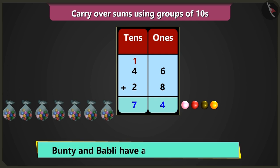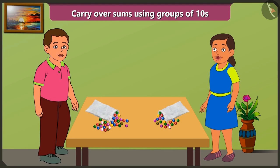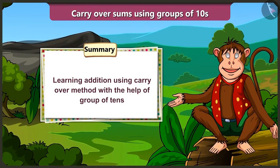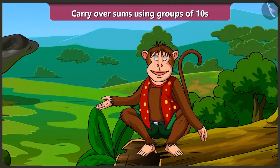So now we have a total of 7 tens and 4 ones, that is 74 marbles. Oh wow! Brother Bunty, you have easily taught me how to add using the carryover method. You are right, Bubbly. Today we learned addition using the carryover method with the help of groups of tens. You must also practice the carryover method to add numbers with all your friends. In the next video, we will see some more examples of addition with the carryover method using groups of tens.